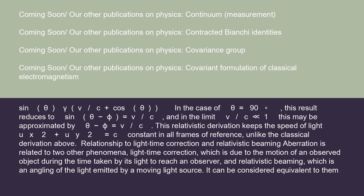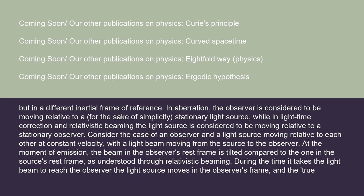Relationship to light-time correction and relativistic beaming: Aberration is related to two other phenomena — light-time correction, which is due to the motion of an observed object during the time taken by its light to reach an observer, and relativistic beaming, which is an angling of the light emitted by a moving light source. It can be considered equivalent to them, but in a different inertial frame of reference. In aberration, the observer is considered to be moving relative to a stationary light source, while in light-time correction and relativistic beaming the light source is considered to be moving relative to a stationary observer.